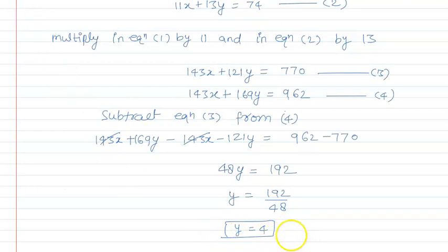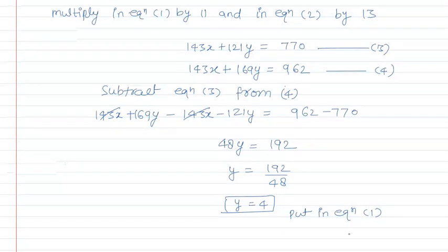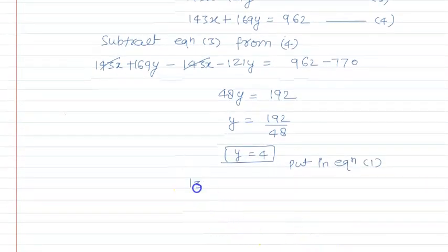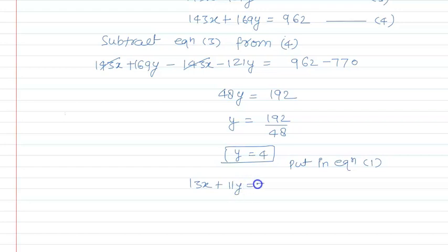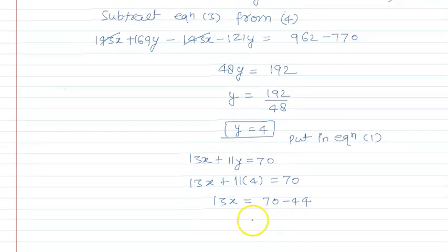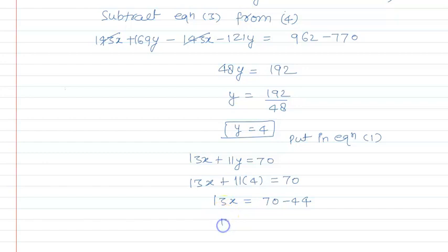Now put the value of y into equation 1. Equation 1 is 13x + 11y = 70. Substituting y = 4: 13x + 11 × 4 = 70, that is 13x + 44 = 70, so 13x = 70 − 44 = 26.